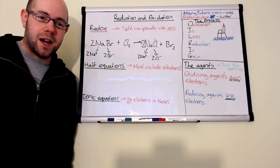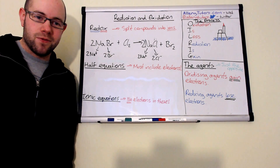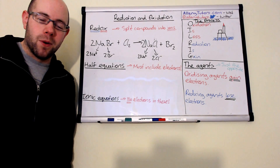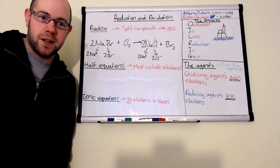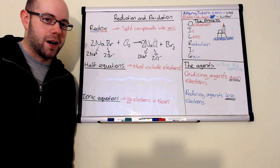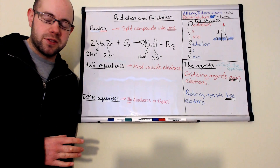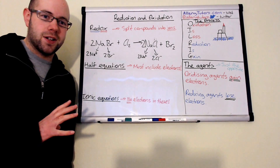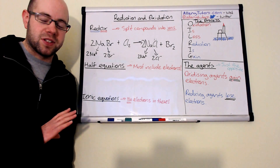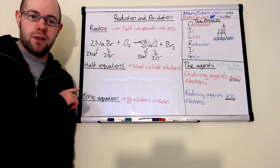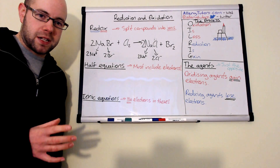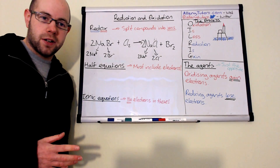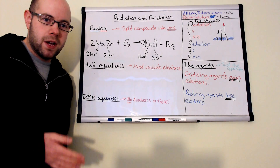Hi everybody. My name is Chris Harris and I'm from AlloyTutors.com. In this video we're going to look at reduction and oxidation - a process by which electrons are moved from one chemical and received by another. We're going to look at oxidation and reduction, the difference between oxidizing and reducing agents, redox reactions, spectator ions, half equations, and ionic equations, which we'll construct from a standard equation.